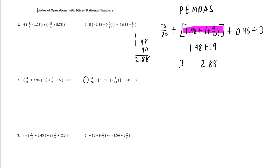And we also have a 3/20. And then we also have a 0.45 being divided by 3. Order of operations says we do parentheses, we do exponents, we do all multiplications and divisions before we do any additions and subtractions. So we have to do this next.